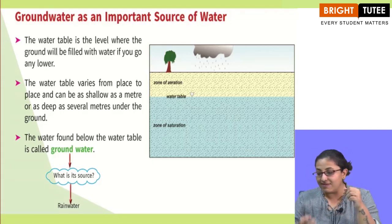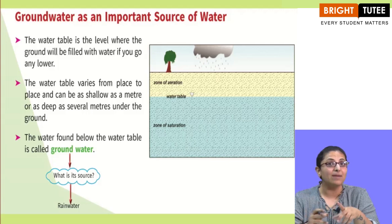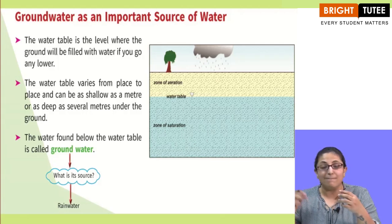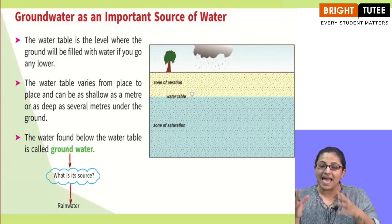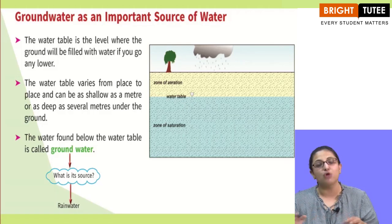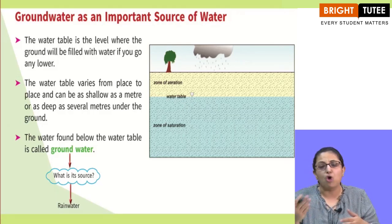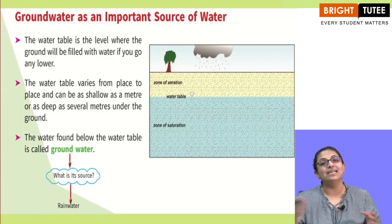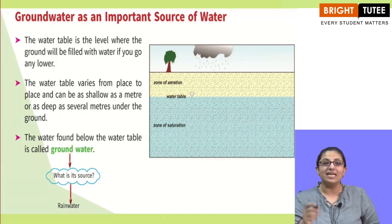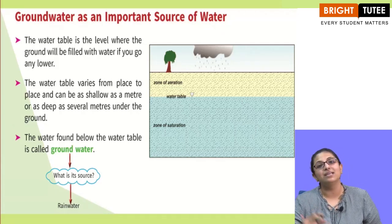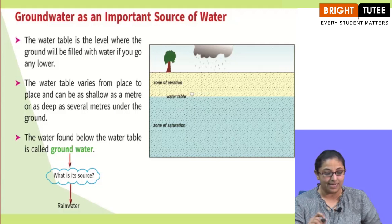When we dig and see water, water does not come immediately once you start digging. Once you start digging there is a zone of aeration. Basically, air is trapped inside the soil particles, rocks or pebbles whatever is there in the ground, and once that air is released there is a point where the water comes out. Basically that particular area is called the water table.